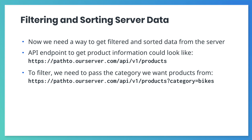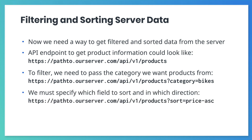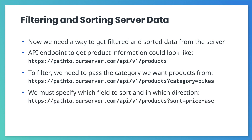Instead, typically we do this by adding a query string to the end of the URL. This lets us pass additional information to the server. For example, if we wanted to show products in the bikes category, we might use a URL like this. To sort data, we'd probably use a sort parameter — this might let us sort from high to low (descending) or from low to high (ascending).